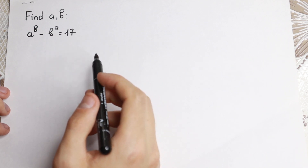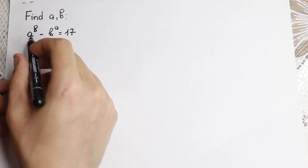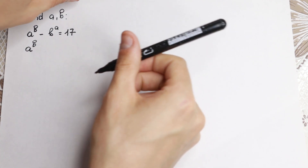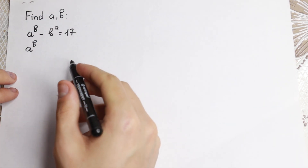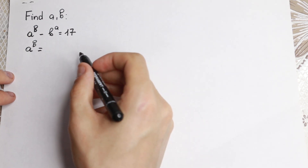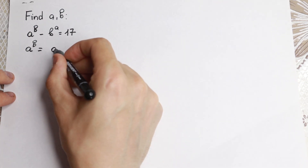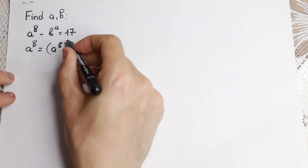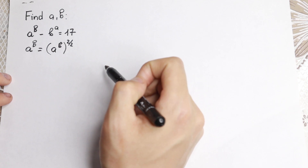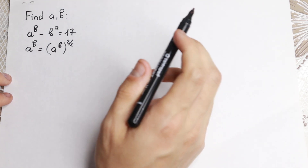I want to show you a really good approach — take a look closely. Let's write a to the power b first. I want to write it in another way: as a to the power b, raised to the power 2 over 2. Since 2 over 2 equals 1, nothing has changed.